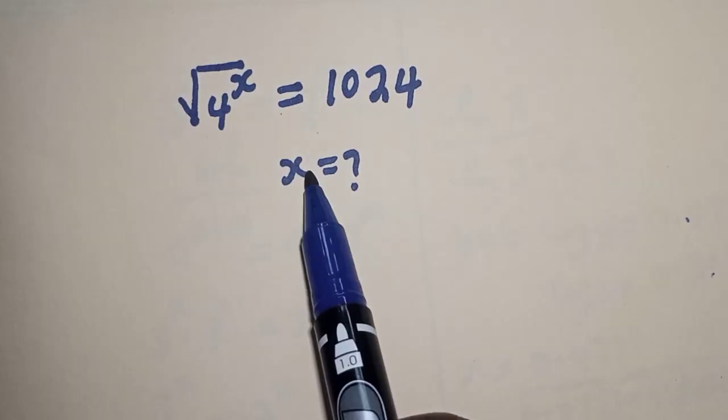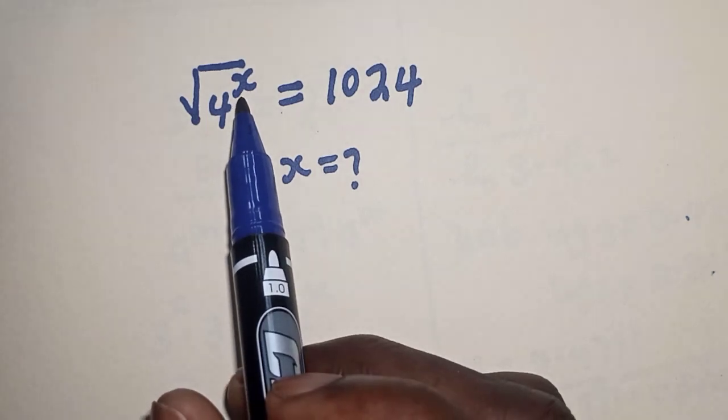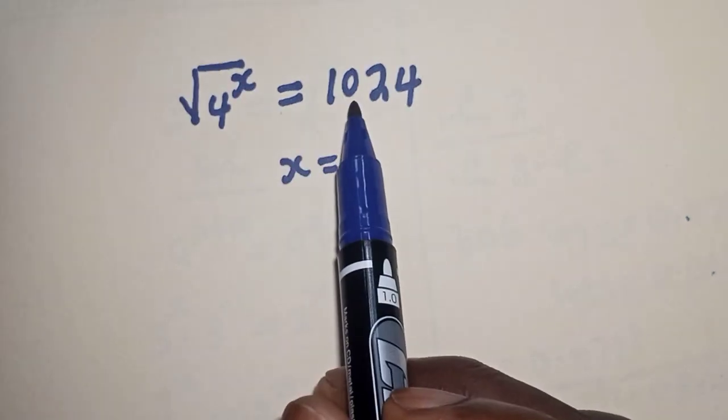Hello, welcome to Magist. In this class, we want to find the value of s from this equation. Square root of 4 raised to power s is equal to 1024.